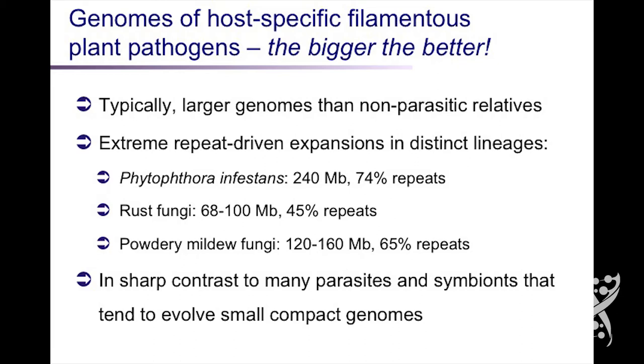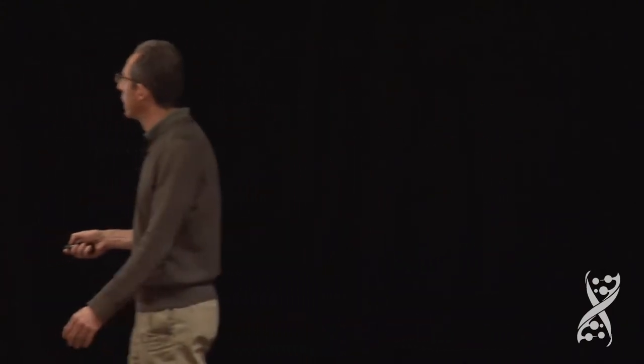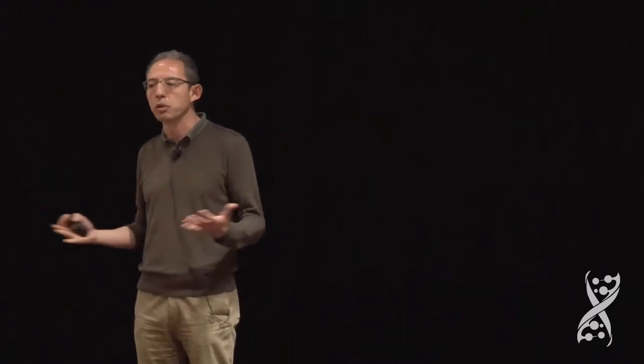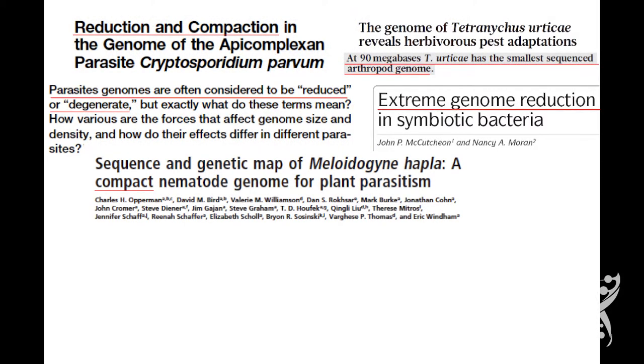Three-quarters of the Phytophthora infestans genome is repetitive. The rust fungi are about 100 megabases — in fact, the Asian soybean rust hasn't been sequenced because it's too big, estimated close to 300 megabases, and still half is repetitive DNA. Powdery mildew fungi have a genome of about 150 megabases, two-thirds of which is repetitive. This is unusual — in sharp contrast to many parasites and symbionts where the typical trend is towards more compact, reduced genomes. For example, the soybean cyst nematode had a more compact genome than C. elegans, and the spider mite has a very compact 90 megabase genome.